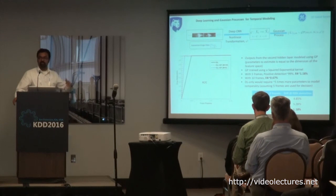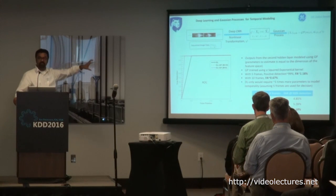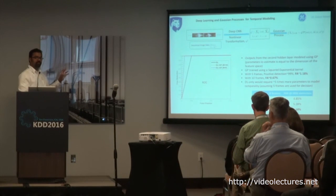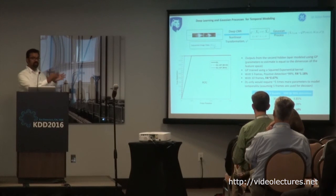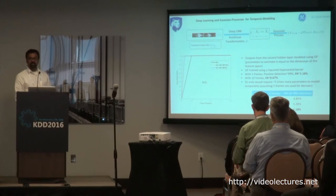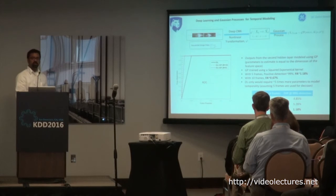Future work includes doing this as a one-step optimization process, since currently the optimization happens in two separate steps and there may be gains from combining them. More broadly, the idea is not just about combustion detection — if you have a sequence of images and expect temporality, this is one way to model the data. For example, when monitoring corrosion, you look at images over time and want to see how the corroded area grows and how the fault develops.